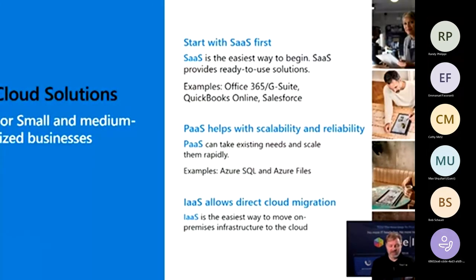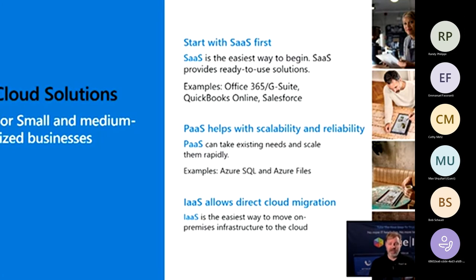Where should small and medium-sized businesses look when considering adopting the cloud? The easiest to adopt is Software as a Service, because these are already canned, out of the box, ready to get started. Examples include Office 365, G Suite, QuickBooks, Salesforce. If your primary software has a cloud option available, that's the easiest place to start — there's often a direct migration path to take existing data and migrate it right into that cloud solution, and your staff doesn't have to learn an entirely new system.